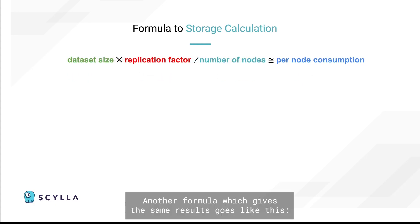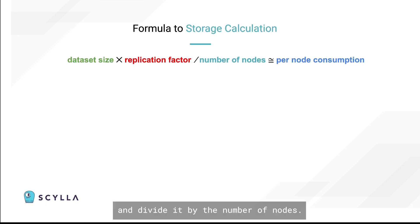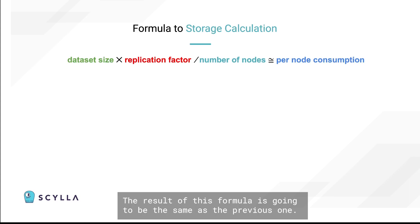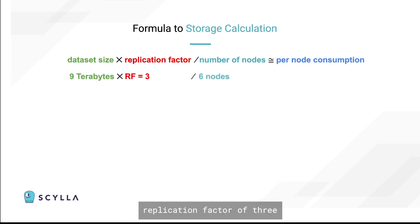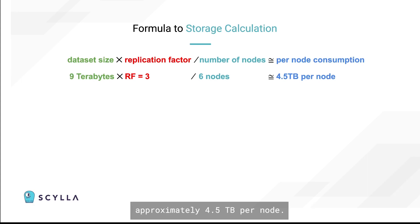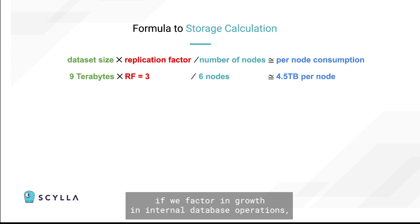Another formula which gives the same result: multiply the dataset size by the replication factor, and divide it by the number of nodes. So, with a dataset size of 9 terabytes, a replication factor of 3, divided by 6 nodes, we get approximately 4.5 terabytes per node. As a result of these formulas, if we factor in growth and internal database operations, we could start with nodes with around 8 or 9 terabytes of storage each.